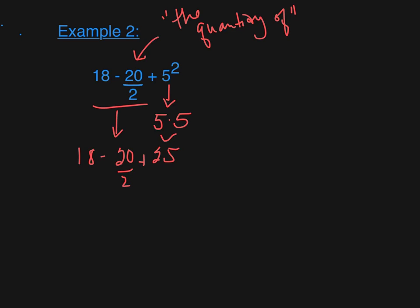PEMD, I did the P to E, MD, multiplication and division in order from left to right. Look at that, I've got some division right here. That will be the next thing that I do. 20 divided by 2 is 10. I've got 18 minus 10, plus 25.